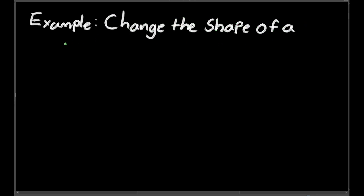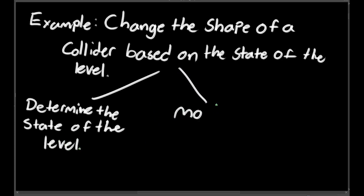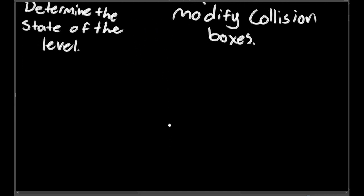Once you pick a part to work on, go back to the first step and define exactly what you want it to do. Let's think of a few parts we can break our example problem into. The overall problem we're trying to solve is changing the shape of a collision box based on the state of a level. I can already see two parts from that explanation, so we need to determine the state of the level, and we need to modify the collision boxes. Both of those are still fairly big problems to solve, so we could break them down even more.